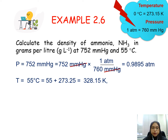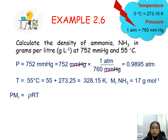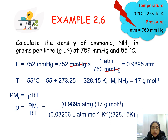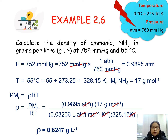For temperature, we get 328.15 kelvin. We can also calculate the molar mass of NH3, which is 17 grams per mol. Substituting these values into PMr equals to rho RT and rearranging to get the rho value, we get the density equals to 0.6247 grams per litre. This is the density of NH3.